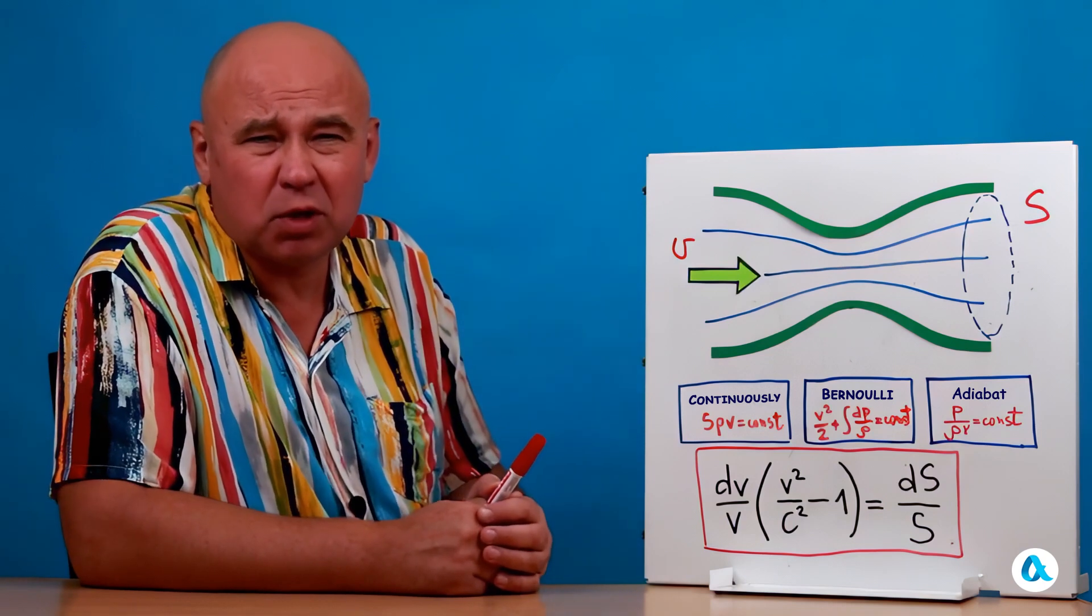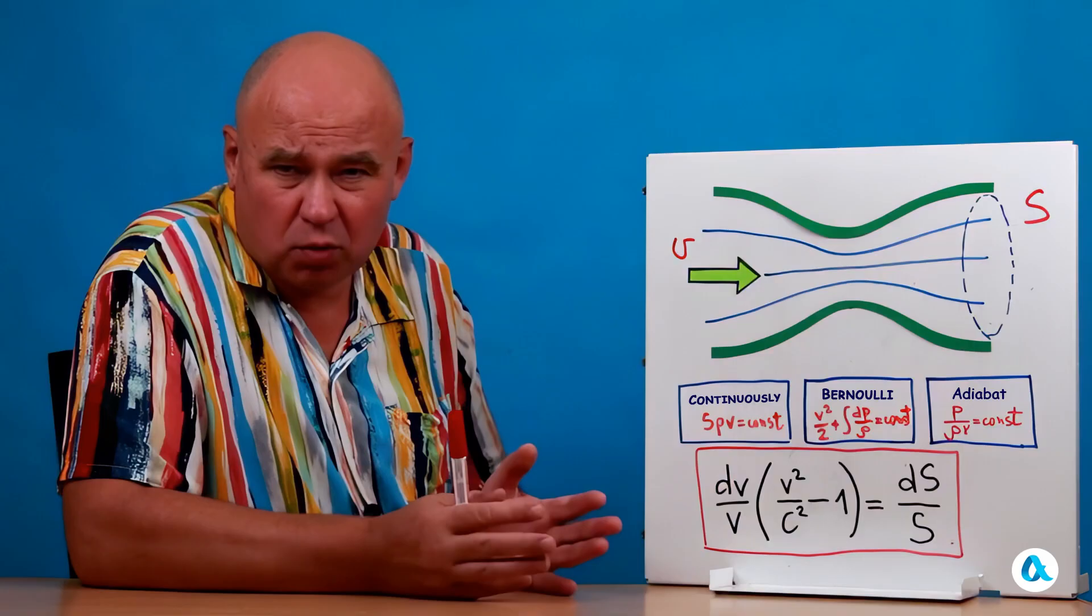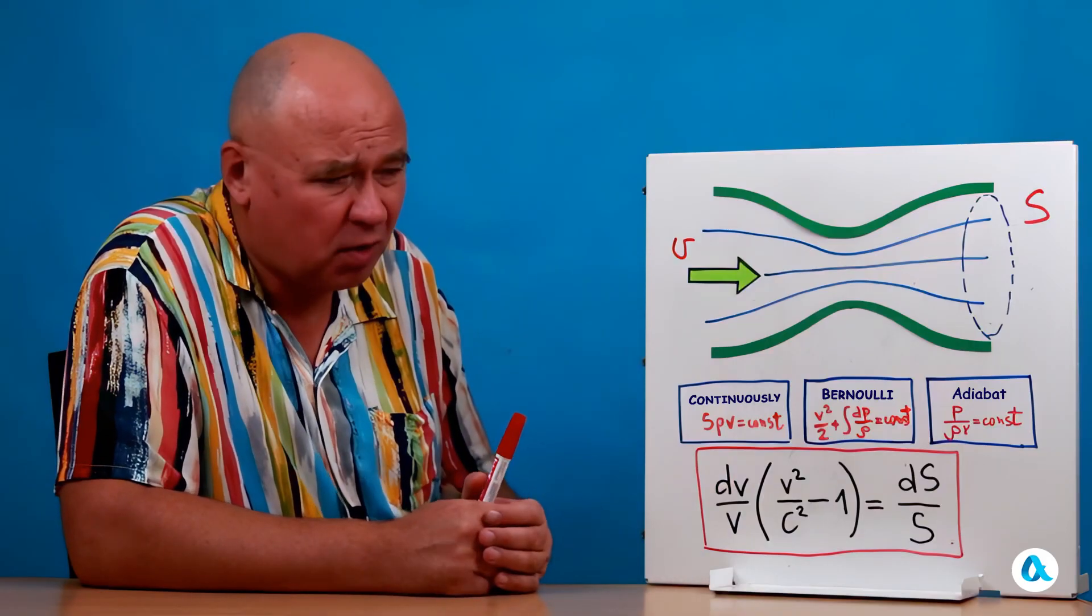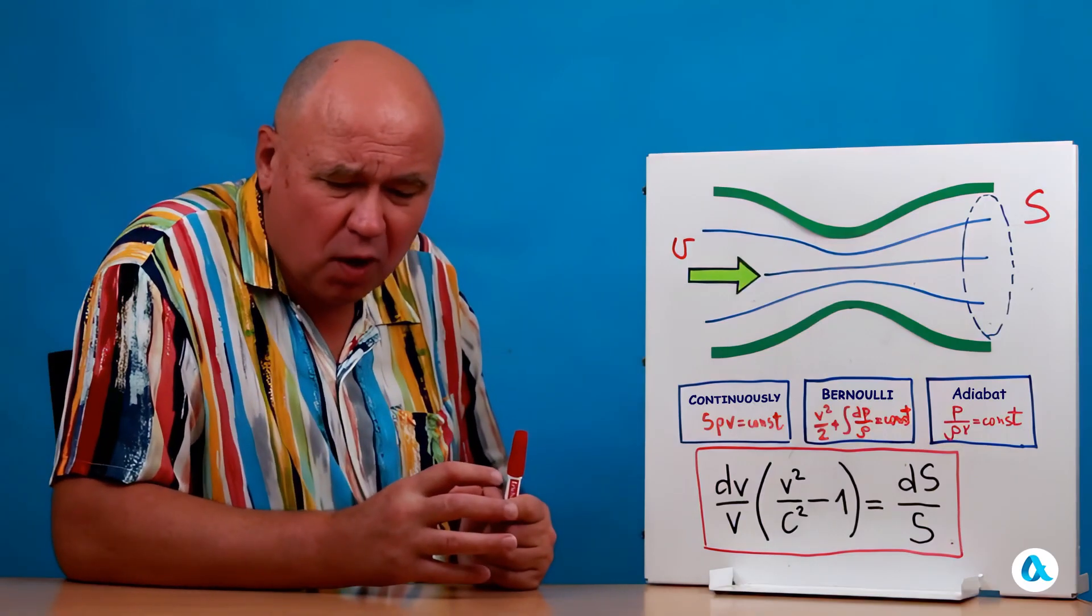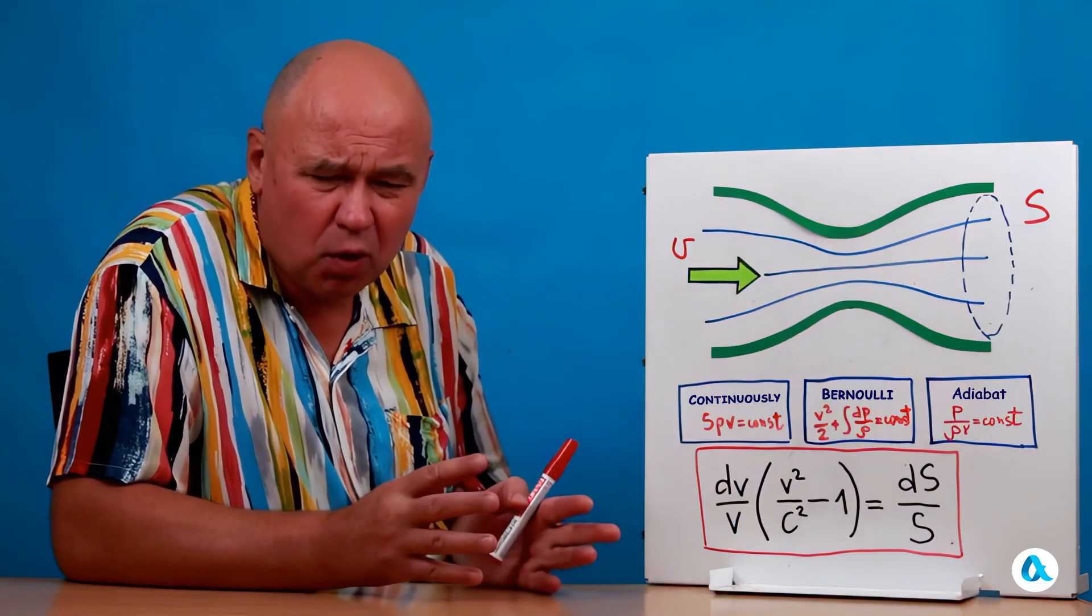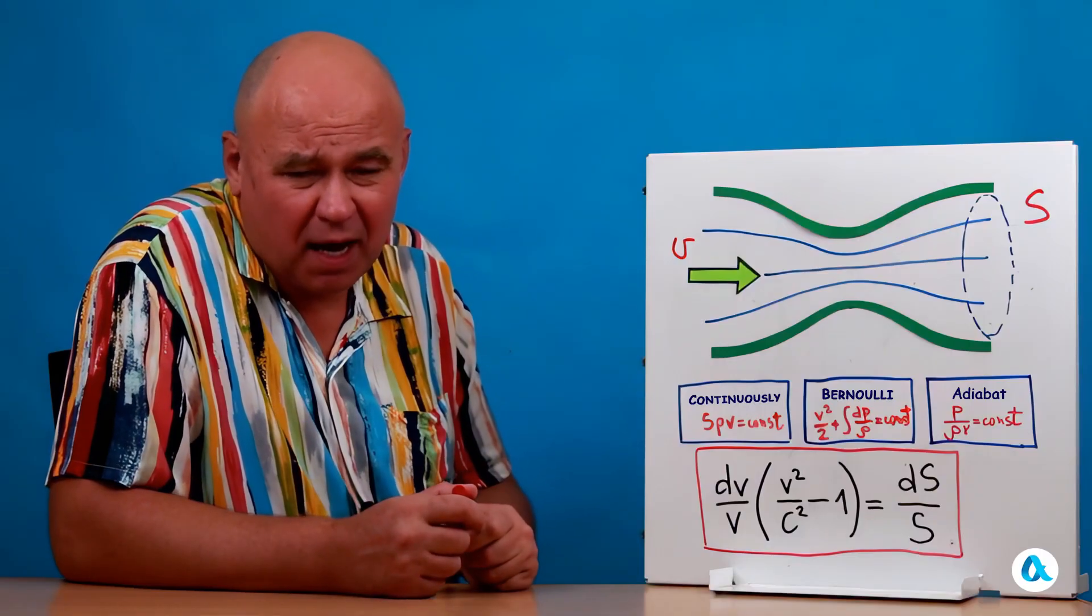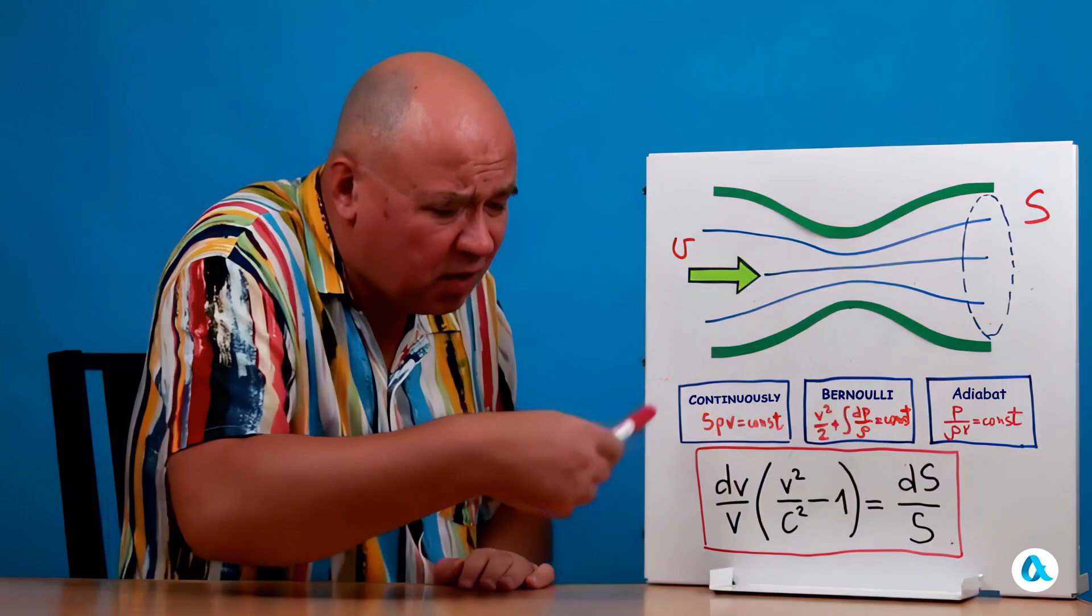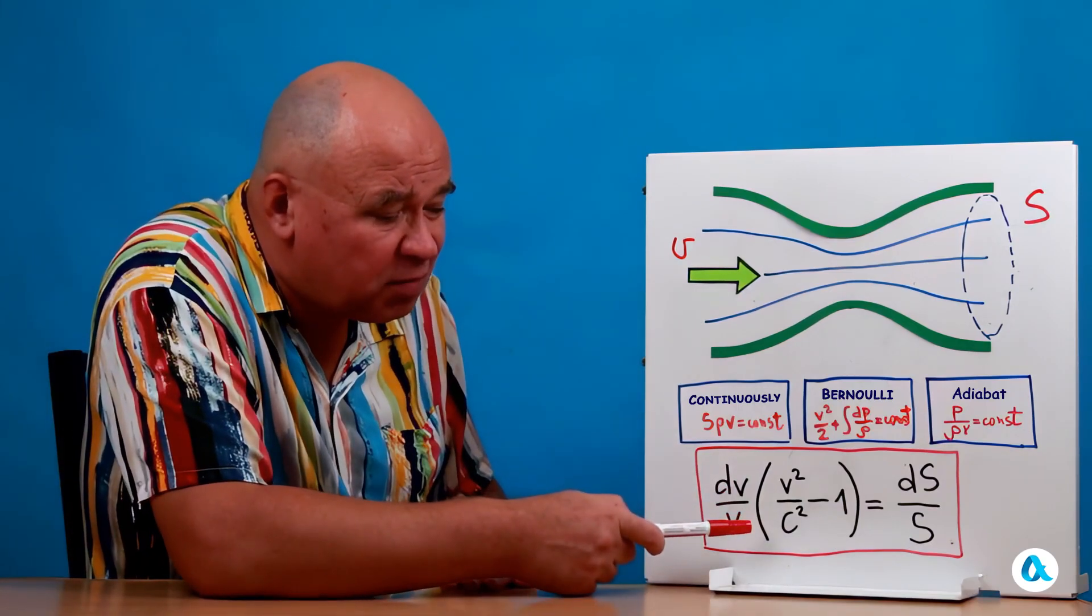Because, generally speaking, the speed of sound can change from one cross-section to another. Primarily because the temperature changes. During adiabatic compression, the gas heats up. During adiabatic expansion, the gas cools down. And as the temperature changes, so does the speed of sound. So, all of this is quite intricately interconnected. But we look at this equation and see the main point.